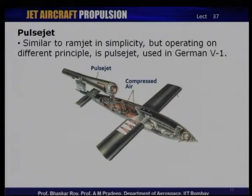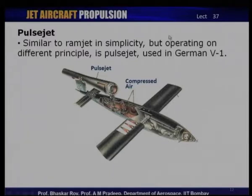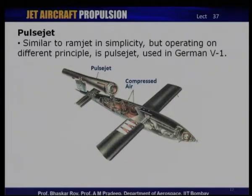Let us take a look at pulse jet engines and how they function. Pulse jets are similar to ramjets in simplicity — again, no compressor, no turbine, and no enclosed combustion chamber. This kind of engine was used by the Germans during World War II in the V-1 aircraft, where the pulse jet engine is mounted on top and uses a compressed air source for initiating the engine. We shall see later what kind of use they are likely to have in modern aircraft.